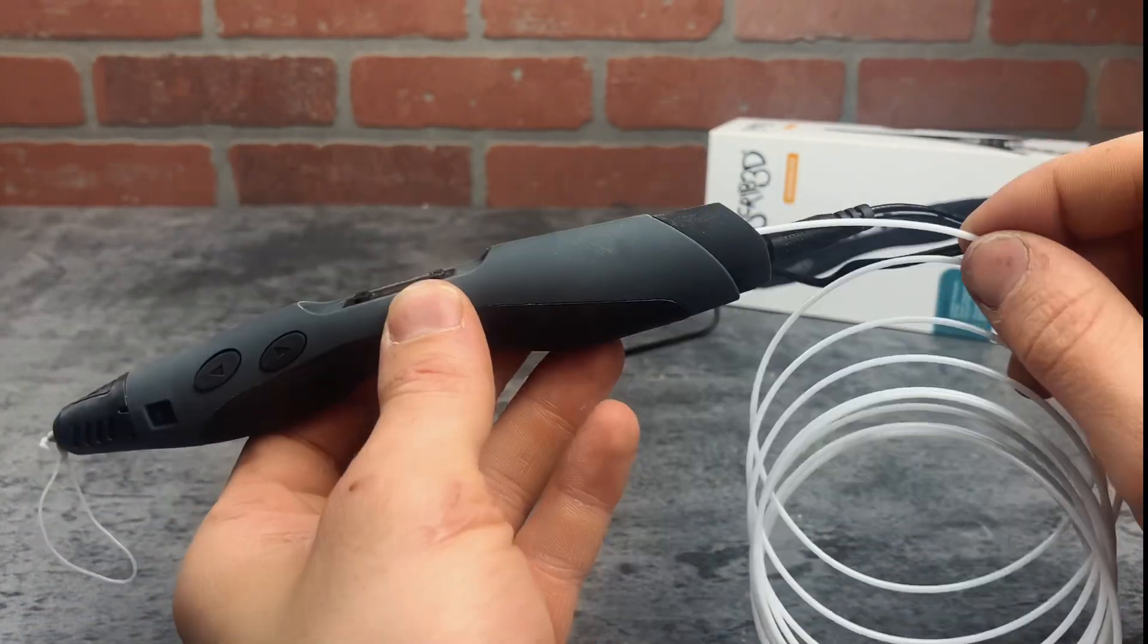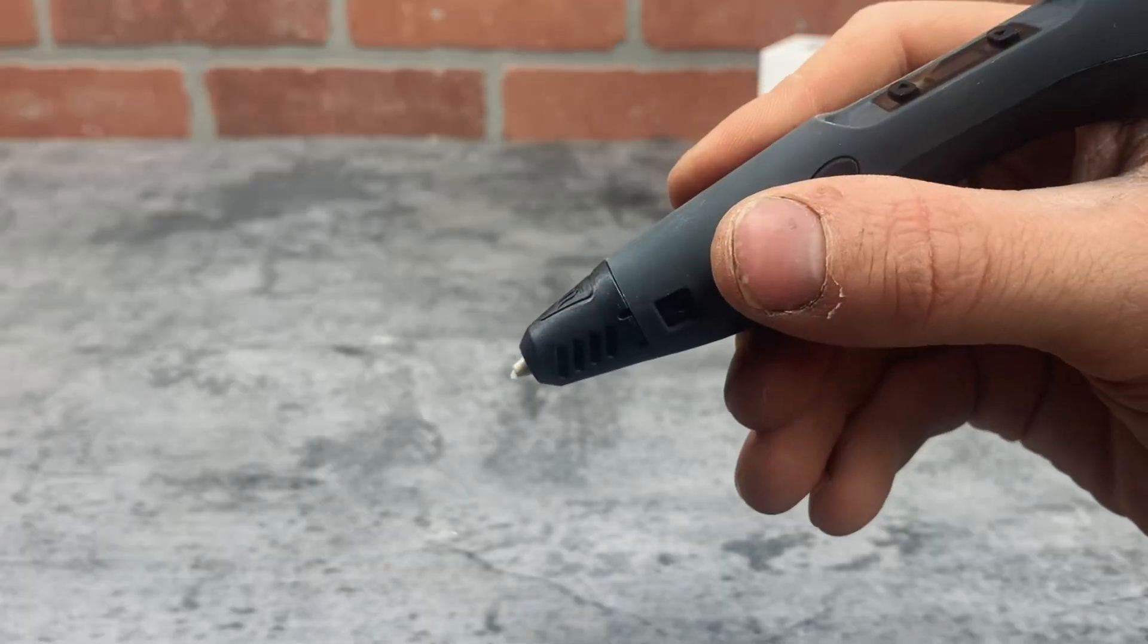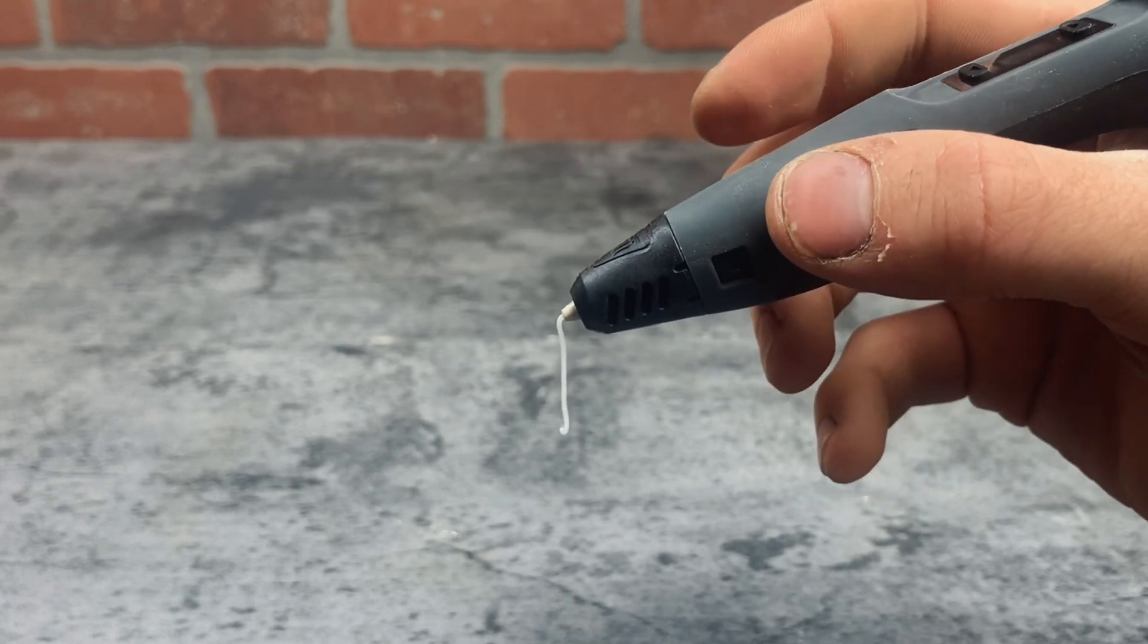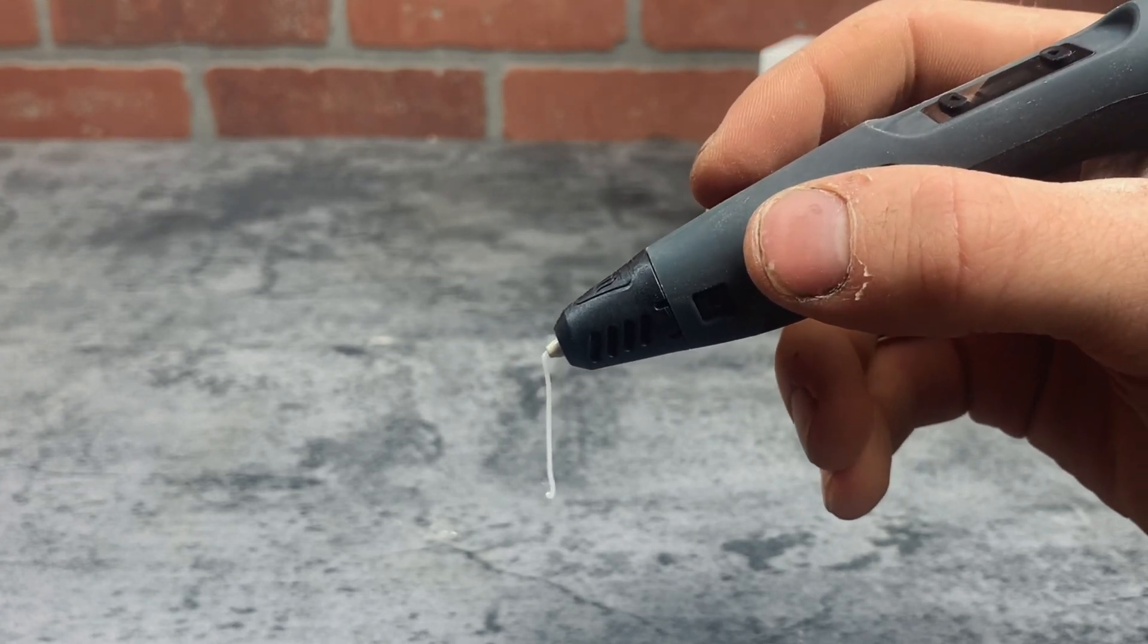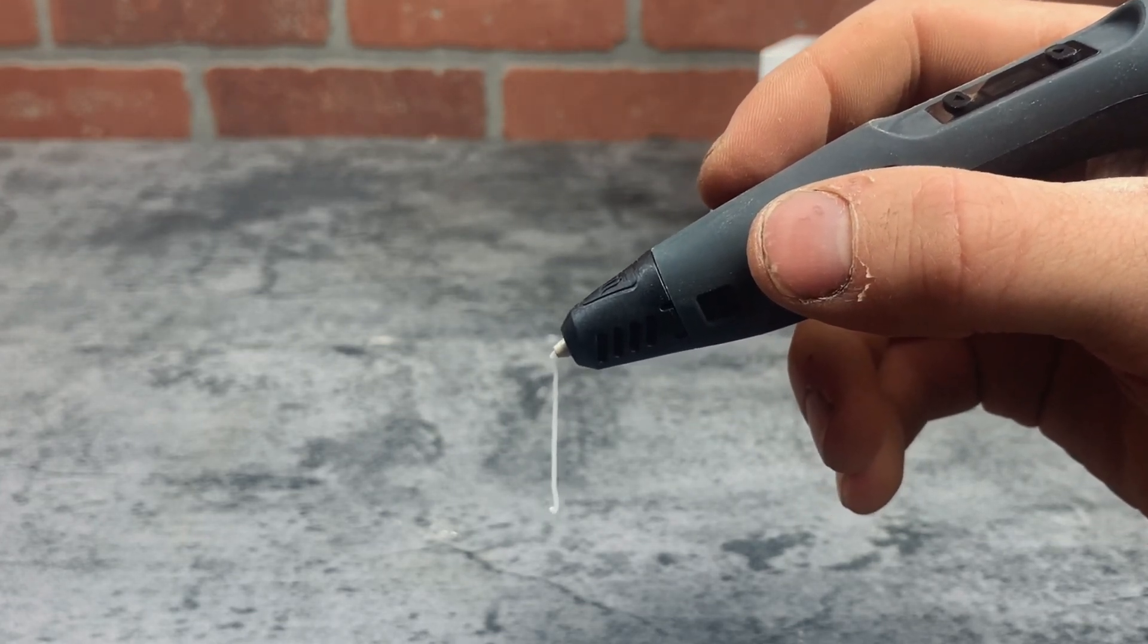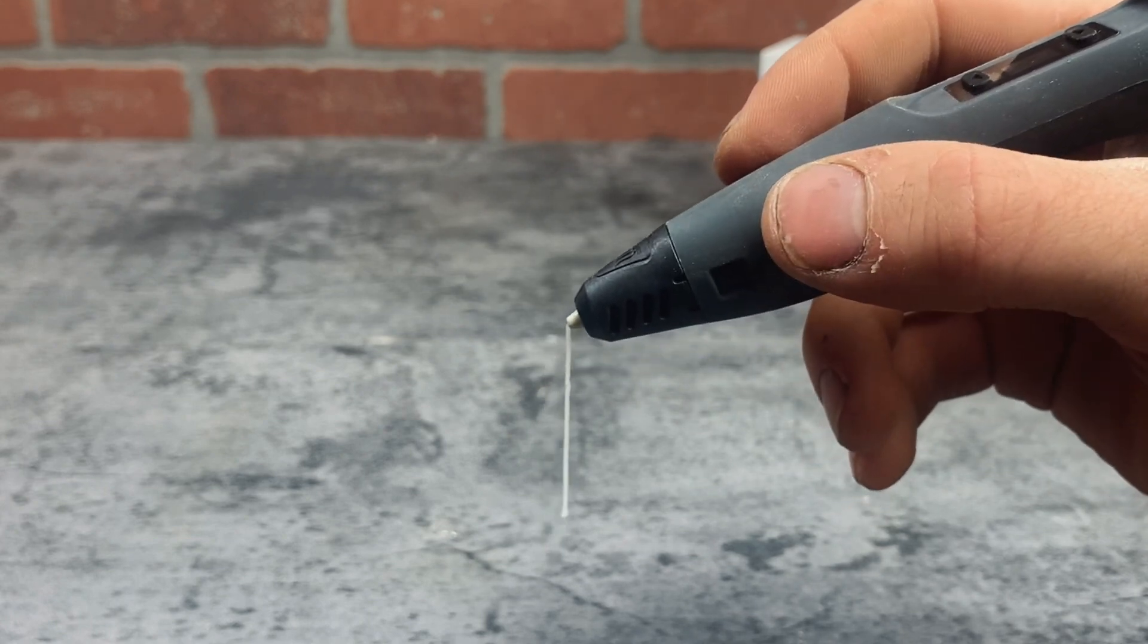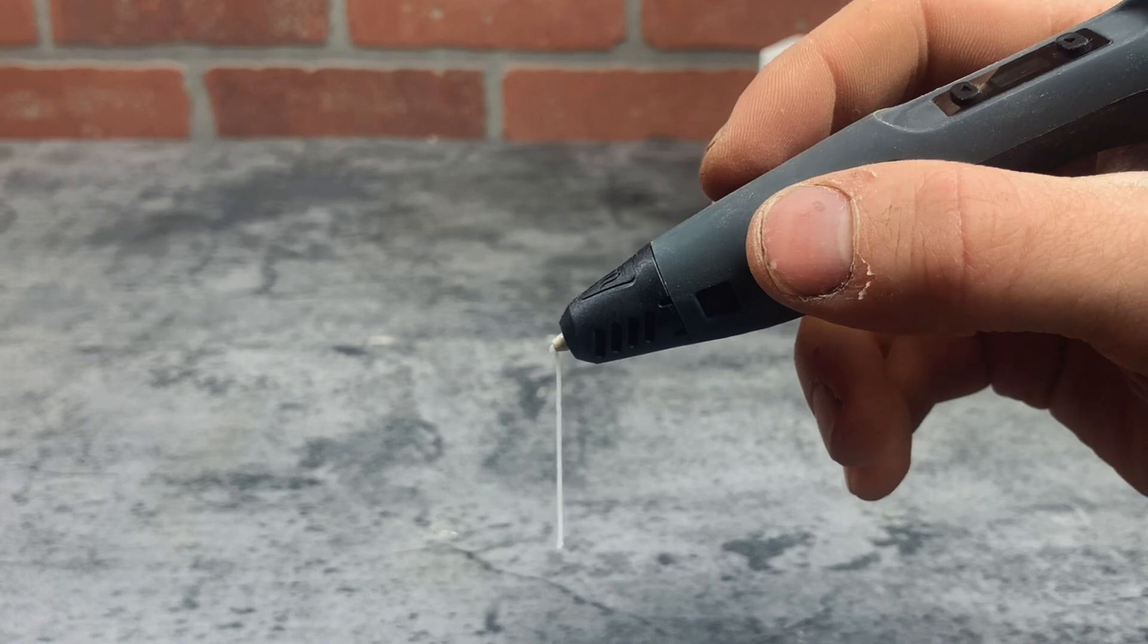One thing you must know about this pen is that the filament keeps melting out for about two seconds after you stop the pen. I've heard this is pretty common with 3D pens and even 3D printers, just because of how they work. So it shouldn't be too big of a deal, just make sure to stop the pen a few seconds before you're done drawing.